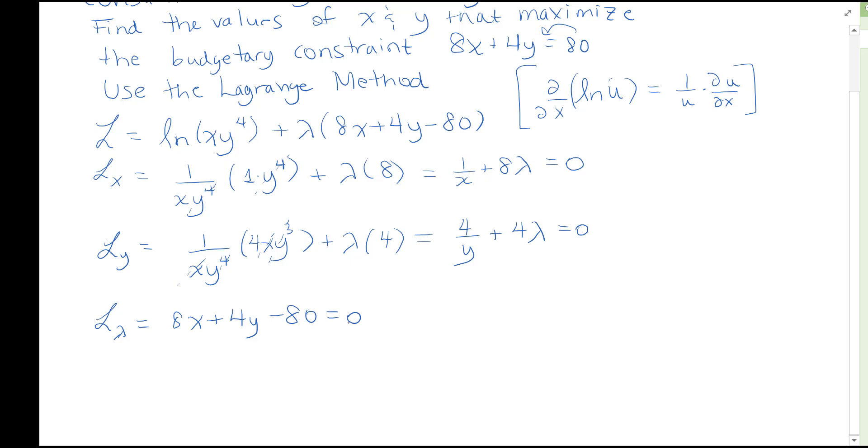And next, now that I've got all my derivatives and set them equal to 0, the next thing I like to do is isolate lambda. So 8 lambda is going to equal negative 1 over x, or if you will, move that 8 over and lambda is negative 1 over 8x.